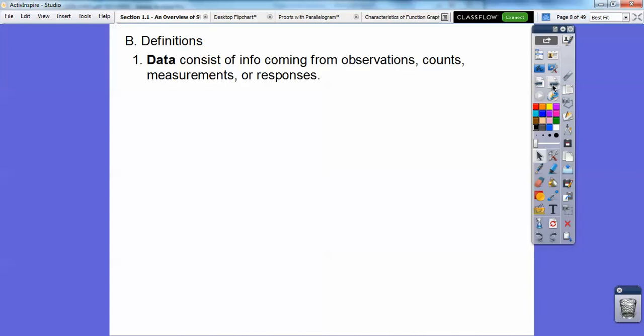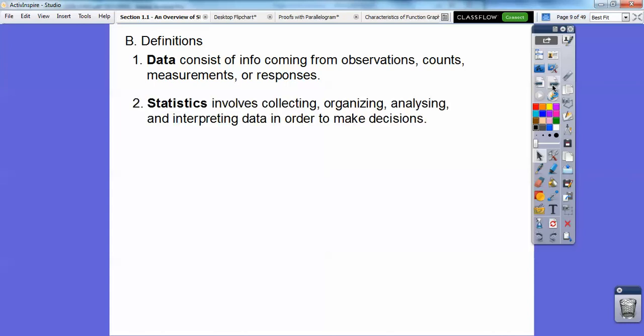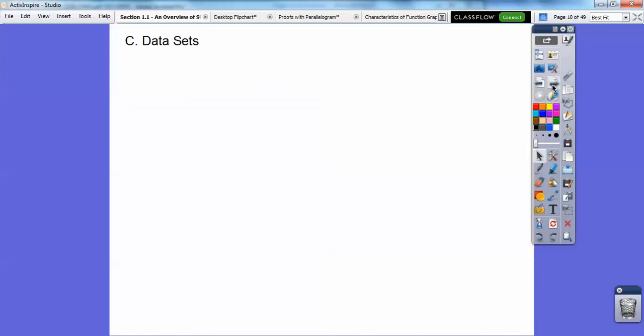Here's some definitions. Data consists of the information coming from observations, counts, measurements, or responses. Statistics involves the collecting of that, organizing, analyzing that, and interpreting data in order to make your decisions.